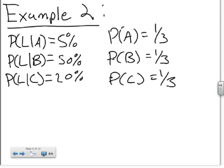When he takes his bike, he's only late 5% of the time, when he takes the car, he's late 50% of the time, and when he takes the bus, he's only late 20% of the time. So we want to calculate if he's late.